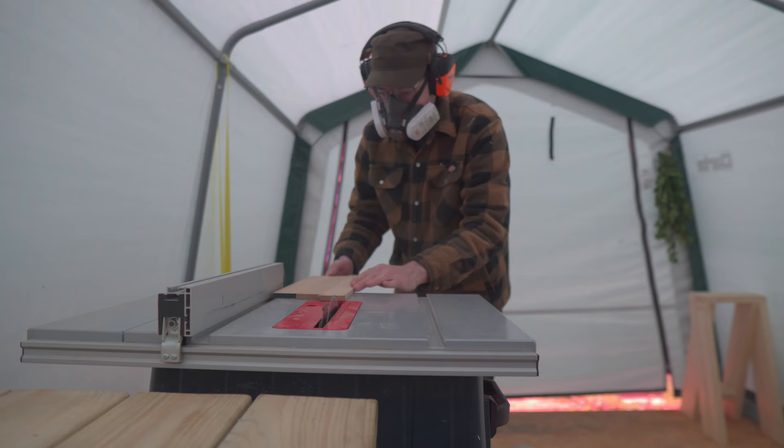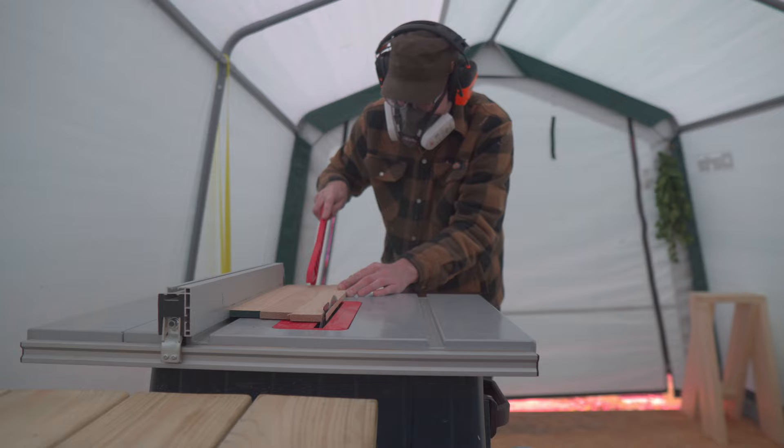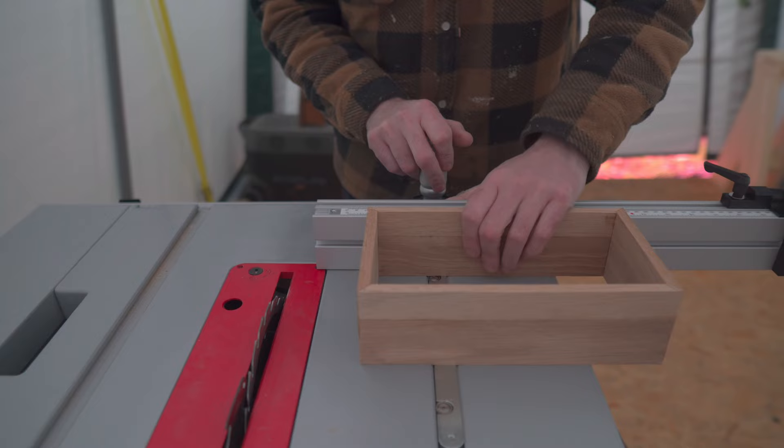Then I can get that panel I glued up, and ripped down to size. To cross cut it, I get the mitre gauge back out, and use a stop block to set the distance, again, just doing it slightly oversized.